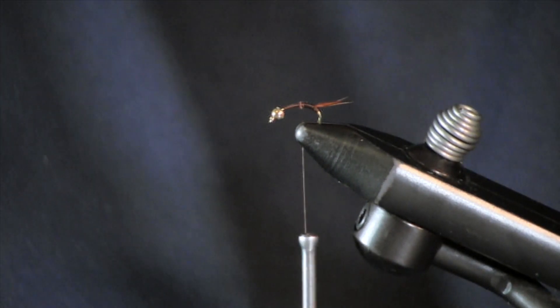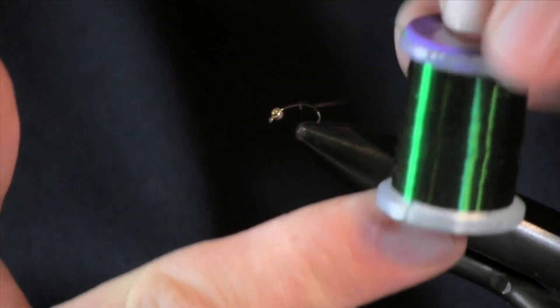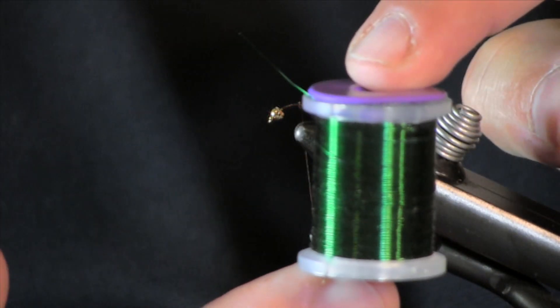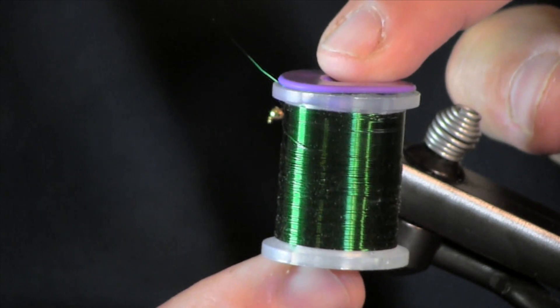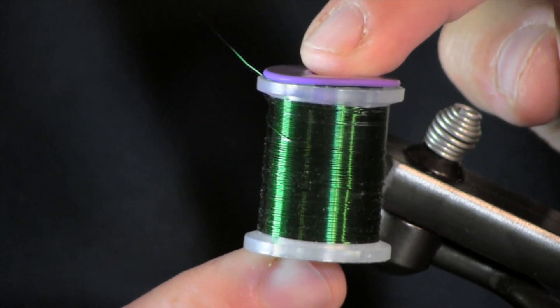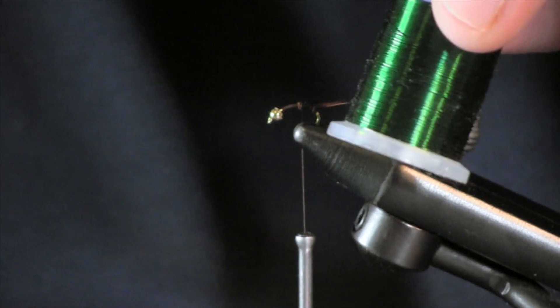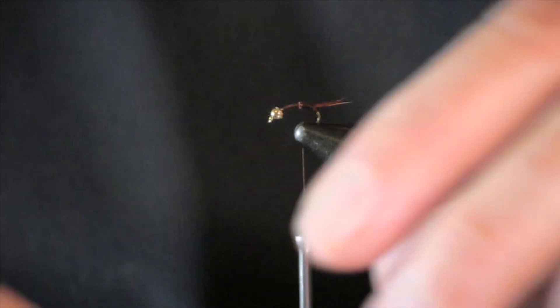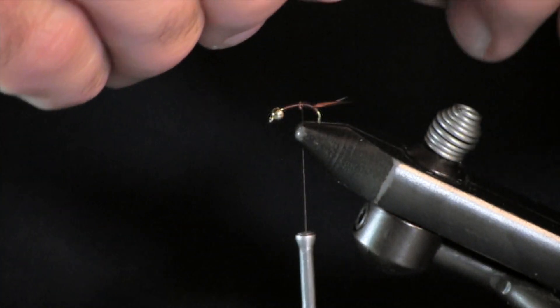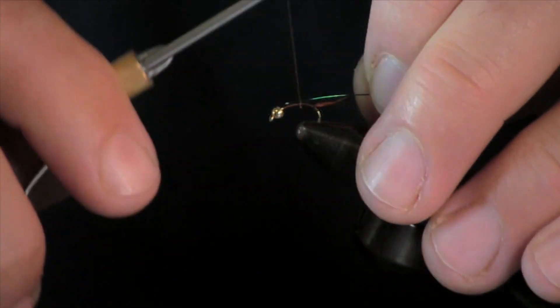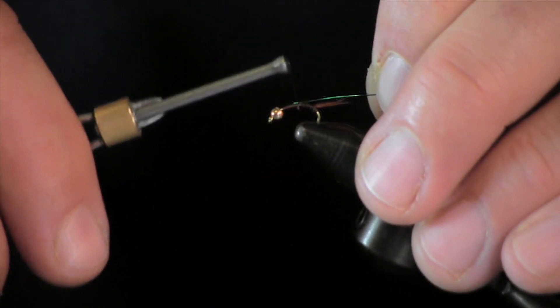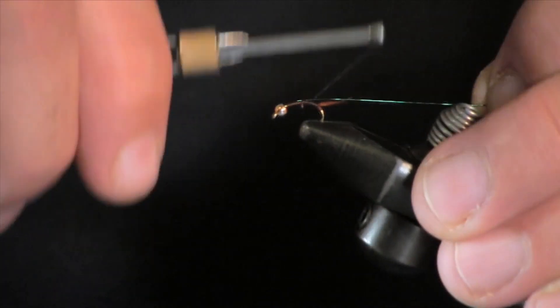My next piece that I am going to use on this is just green wire. Like I said I stray from the standard a little bit on this, the standard would be your copper. I like the color, I like the greens, a lot of green insects in the creeks around our area.